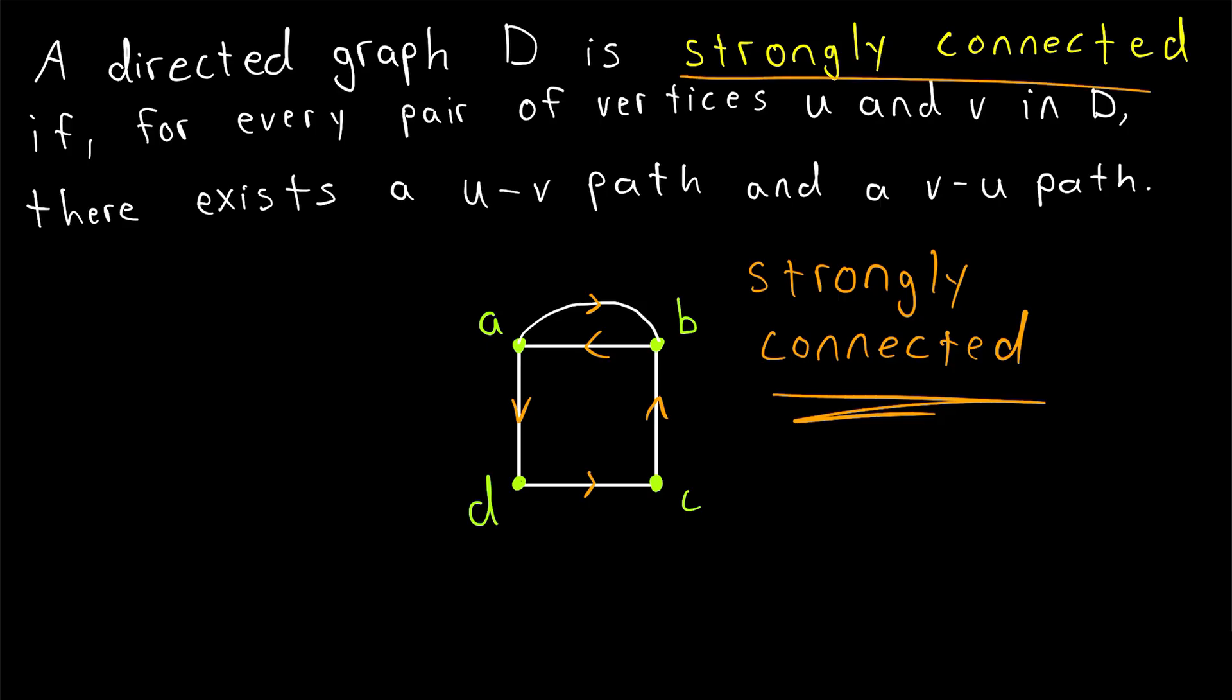So that's what it means to be strongly connected. A directed graph D is strongly connected if for every pair of vertices U and V in D, there exists a path going from U to V and a path going from V to U. So I hope this video helped you understand the definition of strongly connected.